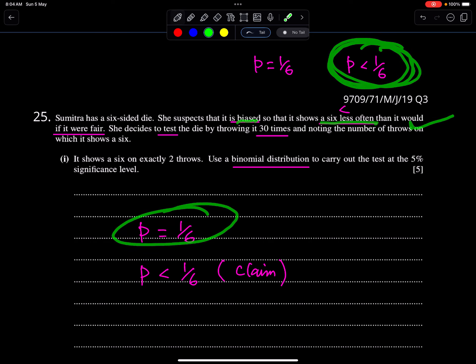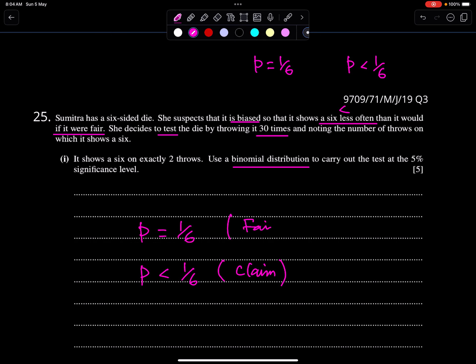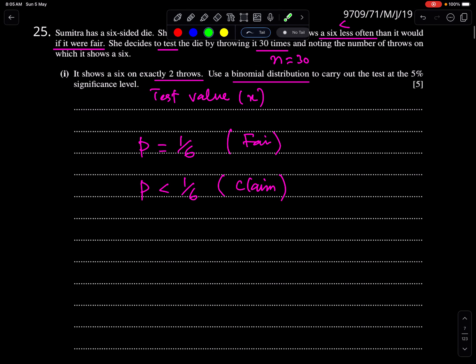P is 1/6 if the die is fair, and if the die is biased, P is less than 1/6. This is the claim. She decides to test the die by throwing it 30 times. This is basically n of binomial, noting the number of throws on which it shows a six. It shows a six on exactly two throws - this is the test value. These types of questions come in testing of hypothesis, and this question is of binomial distribution.